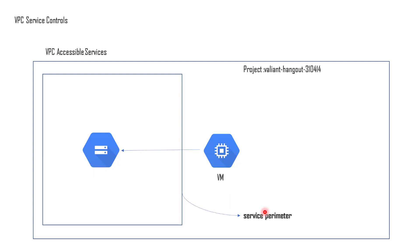In a previous chapter we created a service perimeter for our cloud storage, and after that we were not able to access that cloud storage account. But what about other services that belong to the same project? Let's say you have a virtual machine within the same project which wants to access this particular cloud storage — would it be able to do so? Let's see all the settings we need to make that possible.